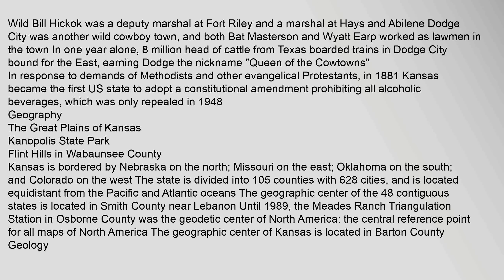Many African Americans also looked to Kansas as the land of promise, led by freedmen like Benjamin Singleton, who began establishing black colonies in the state in the late 1870s, fleeing increasing discrimination. They became known as exodisters. At the same time, the Chisholm Trail was opened and the Wild West era commenced in Kansas. Wild Bill Hickok was a deputy marshal at Fort Riley and a marshal at Hays and Abilene. Dodge City was another wild cowboy town, where both Bat Masterson and Wyatt Earp worked as lawmen. In one year alone, eight million head of cattle from Texas boarded trains in Dodge City, earning it the nickname Queen of the Cowtowns.